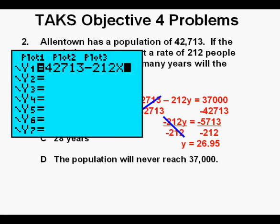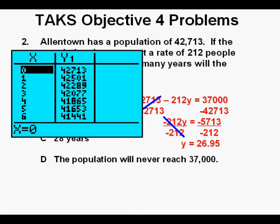Alternatively, we could have placed 42,713 minus 212x in our function editor in the graphing calculator. And then from there, we can go to the table view by pressing 2nd, then graph.